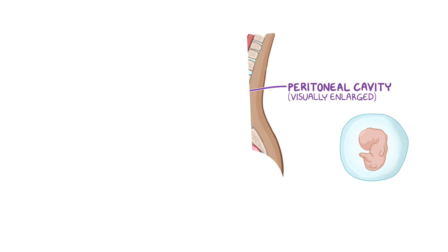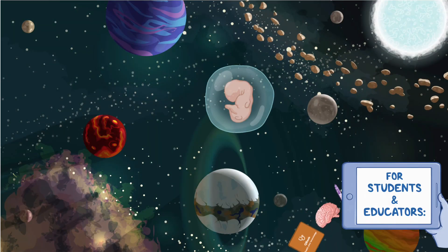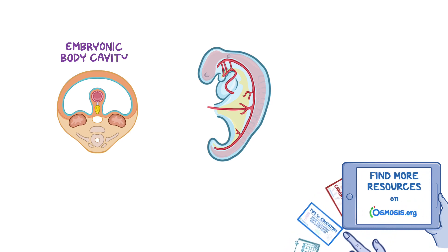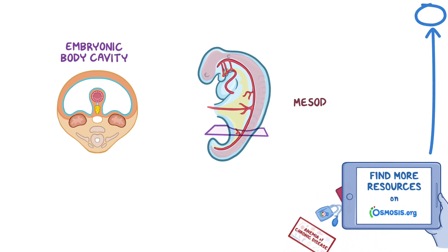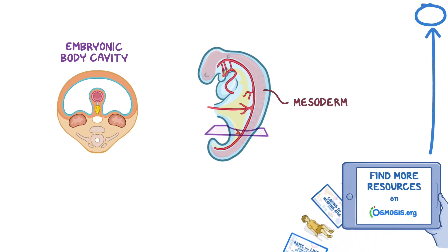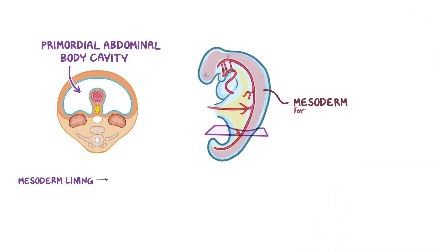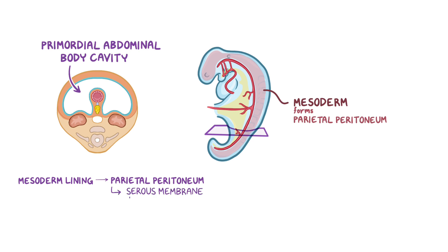Once upon a time, in an amniotic galaxy far, far away, the embryonic body cavity is lined with mesoderm. As the fetus is developing, the embryonic body cavity becomes the primordial abdominal cavity, and the mesoderm lining it becomes the parietal peritoneum, which is a transparent serous membrane that helps to form a closed sac called the peritoneal cavity.